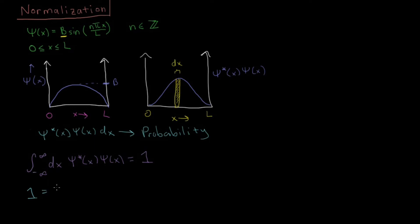The equation we have is one equals the integral from - and our particle in this case can't be anywhere, it's restricted between zero and L because the wave function is zero outside of that range, as we discussed in the previous video. So we're integrating from zero to L. Then we have b sine n pi x over L, take the complex conjugate of this, times b sine n pi x over L, and then dx.